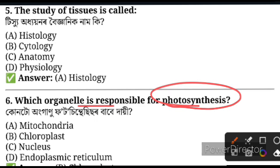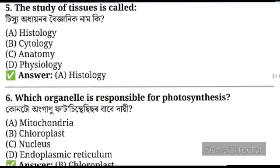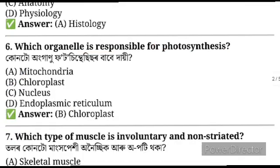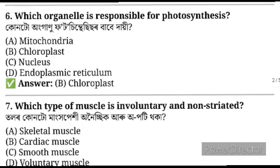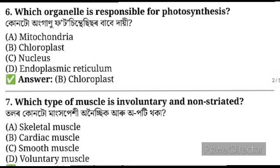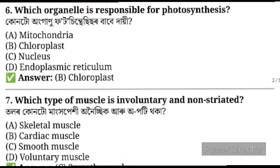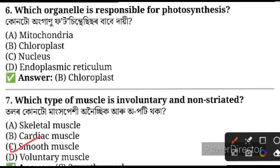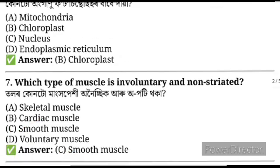Question number 7: Which type of muscle is involuntary and non-striated? The answer would be smooth muscle, option C.